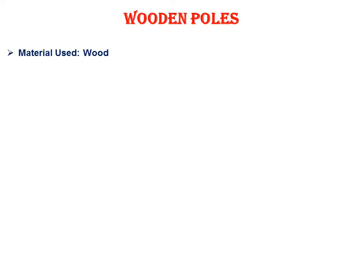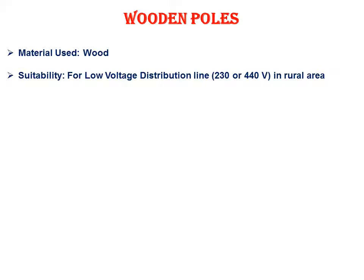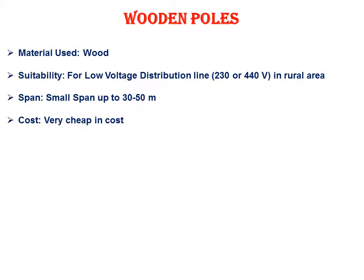Now let's talk about wooden poles. The material used is obviously wood. The suitability is for low voltage distribution lines of 230 V or 440 V in rural areas — meaning they are used in villages. Wooden poles are not suitable for higher voltages; beyond that level they are not used.